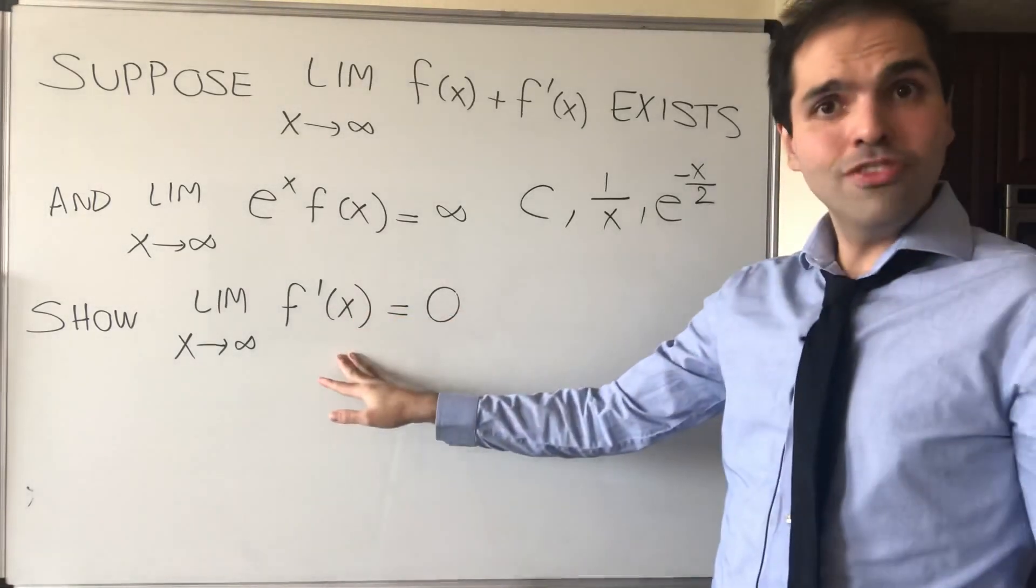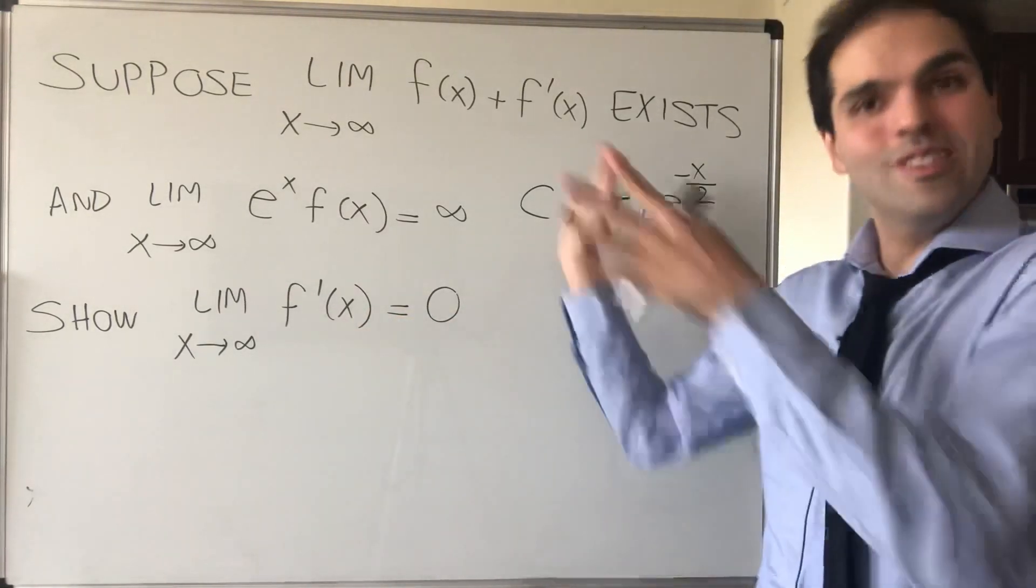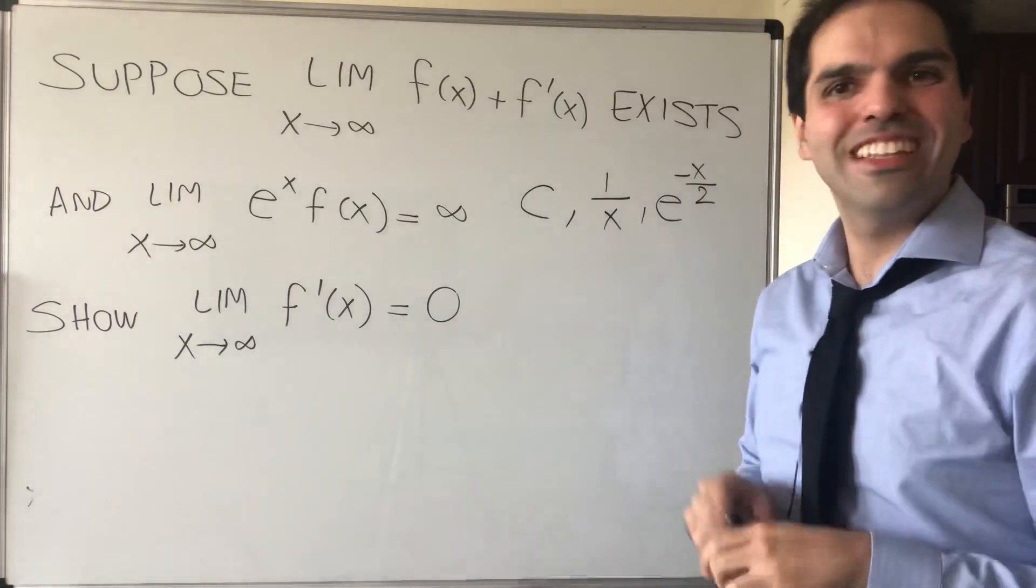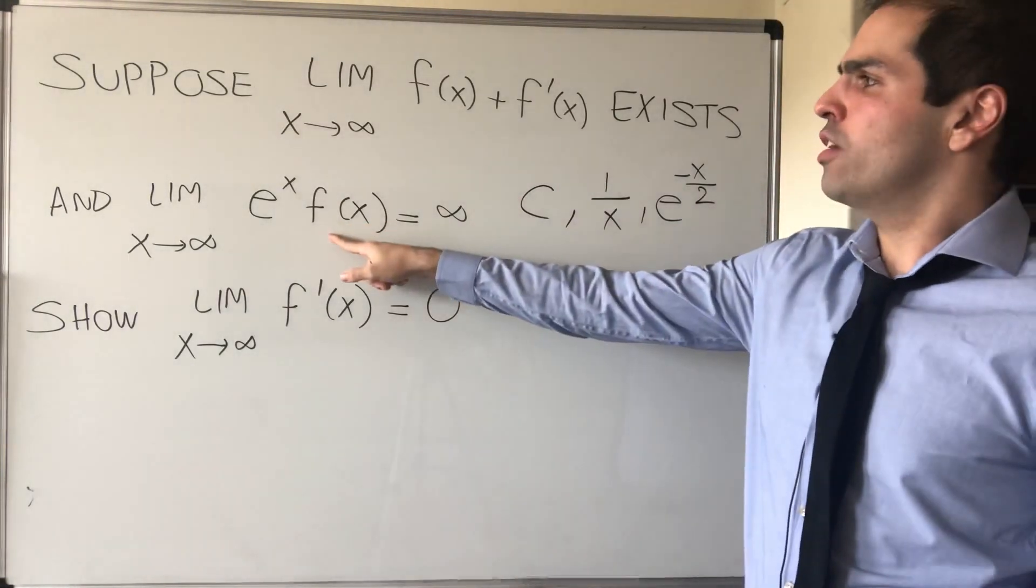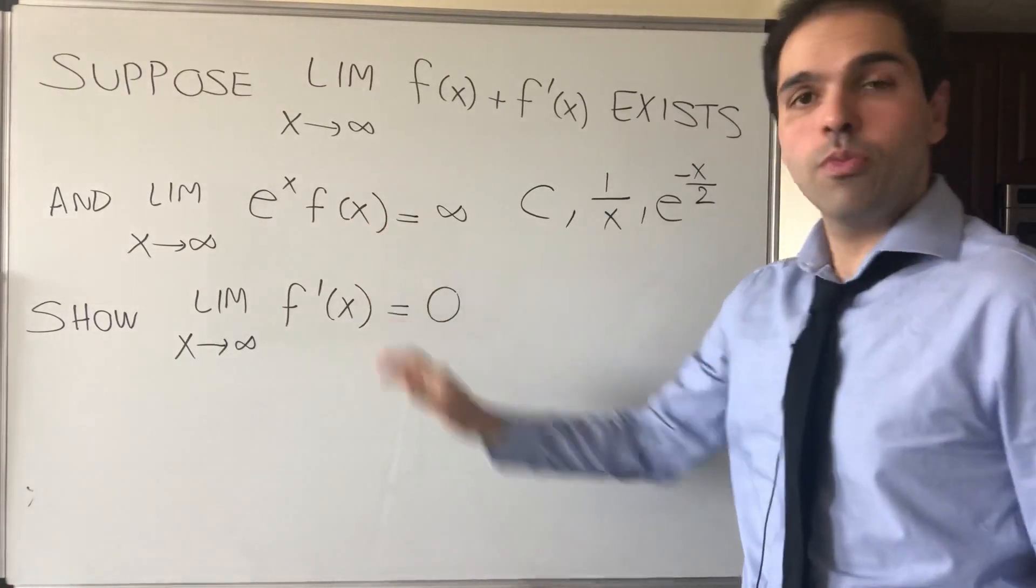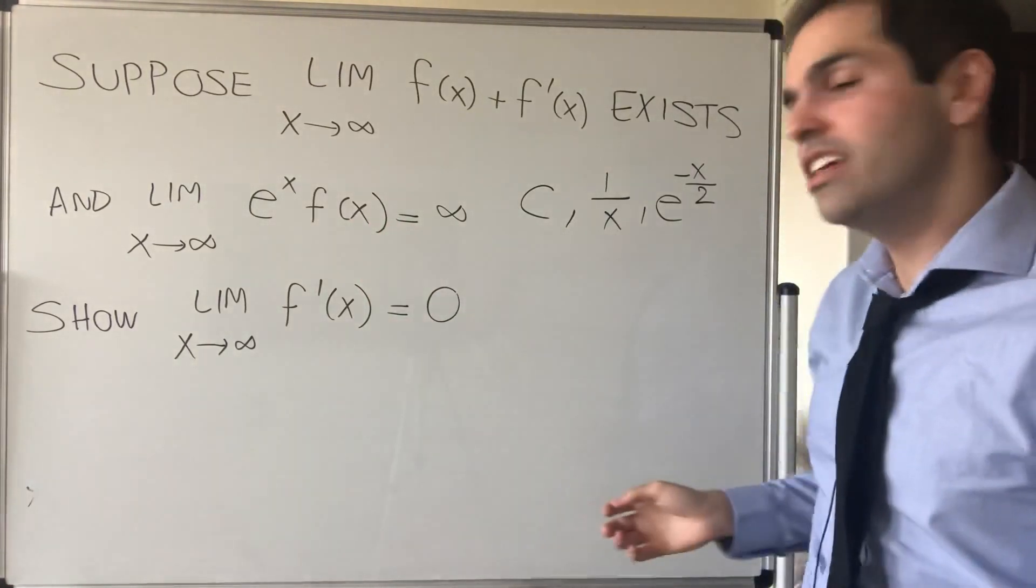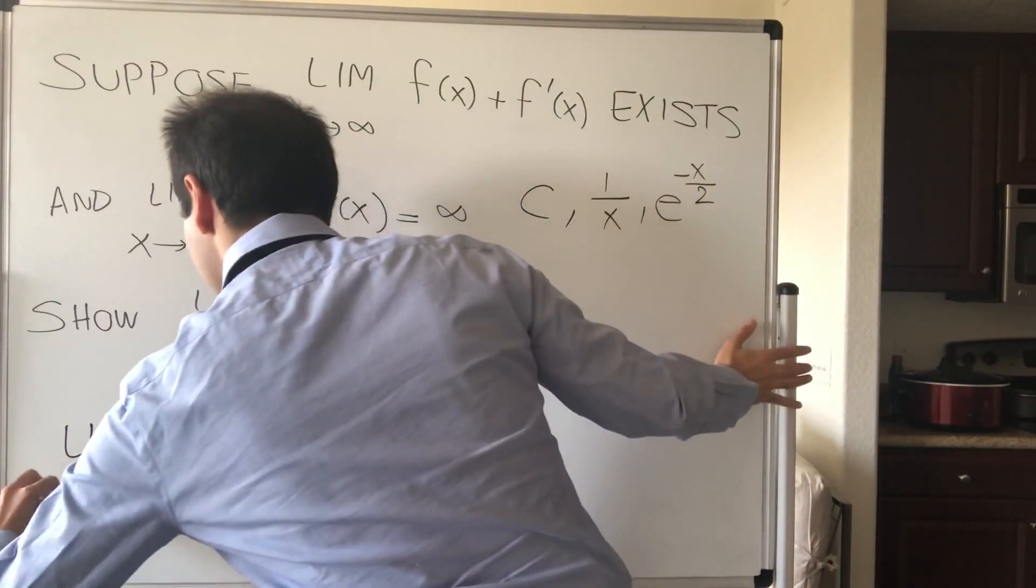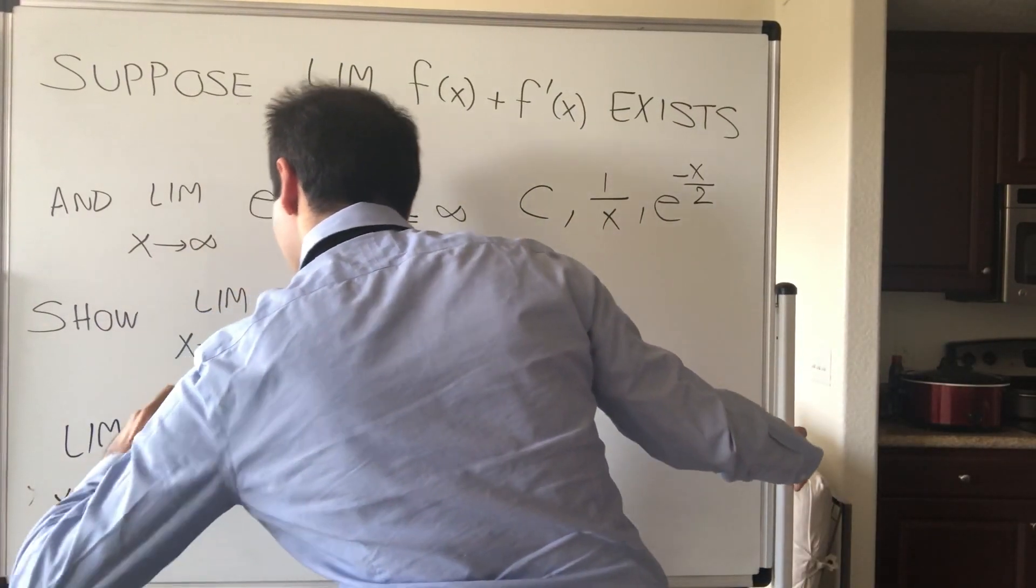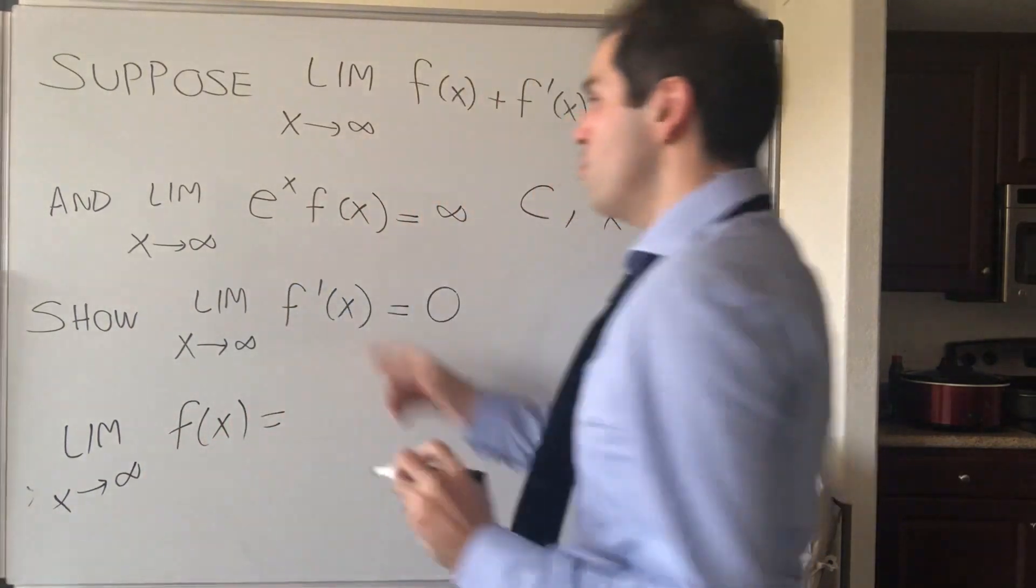And so let's prove this, and you'll see the proof is as quick as the problem statement. That's why I wanted to cover it. And notice the following. We have some info about f, so let's start with the limit as x goes to infinity of f. So limit x goes to infinity of f of x.